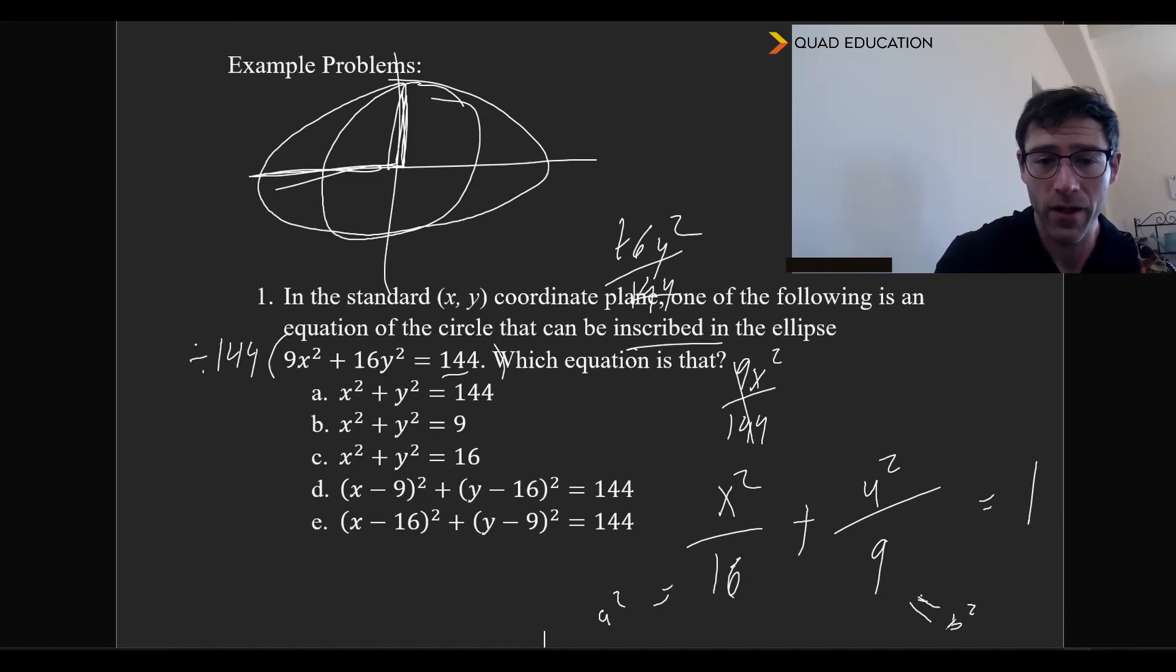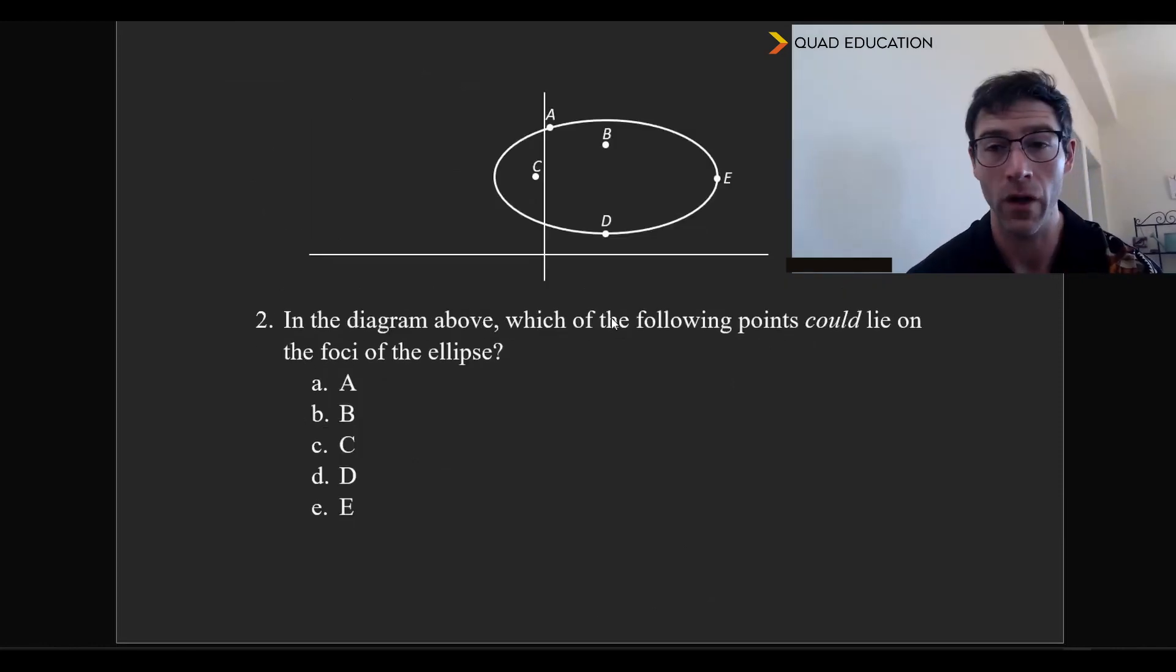The minor axis is 3, and that's going to leave us with b as our answer, which is where we have our radius squared equal to 9.